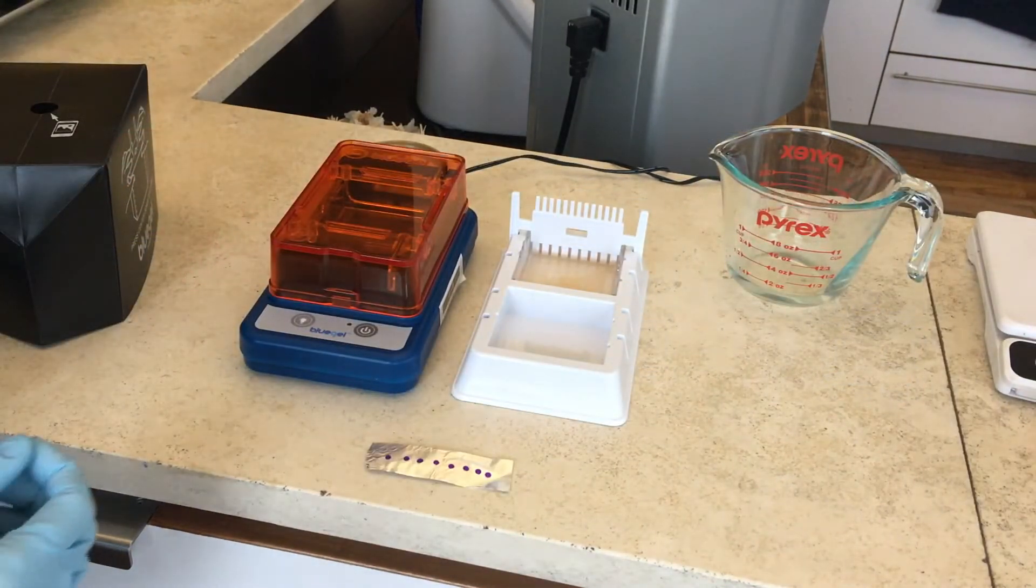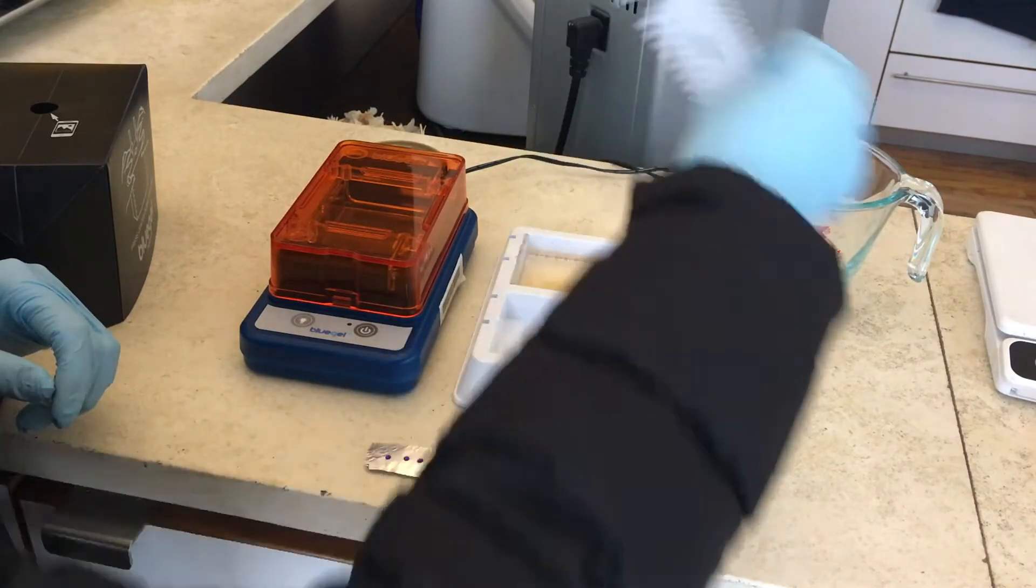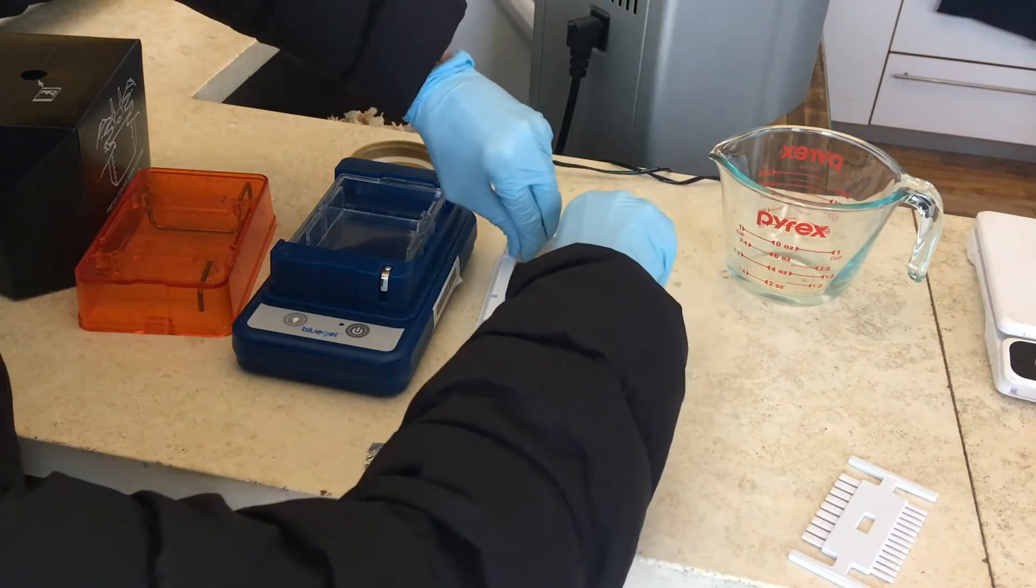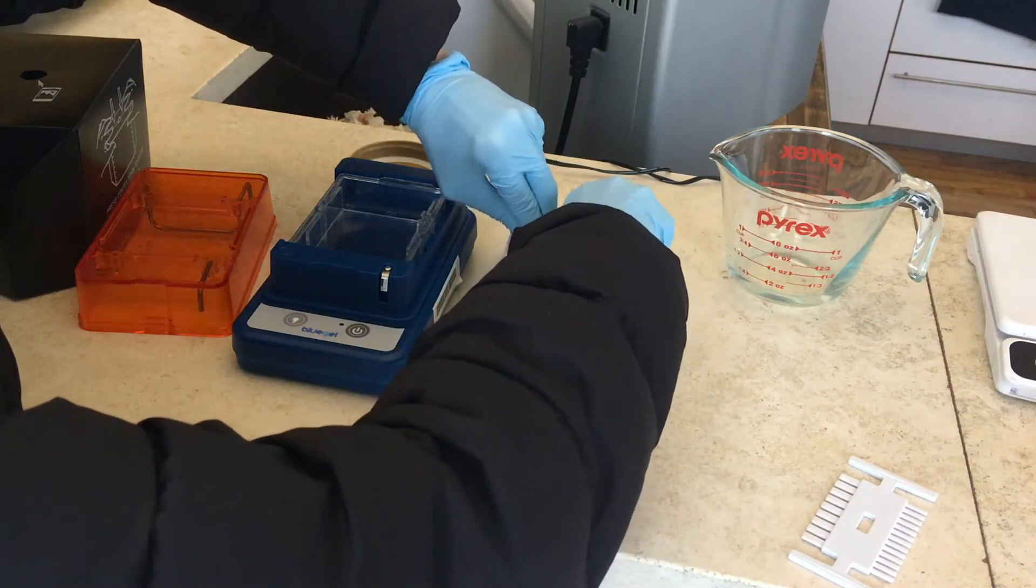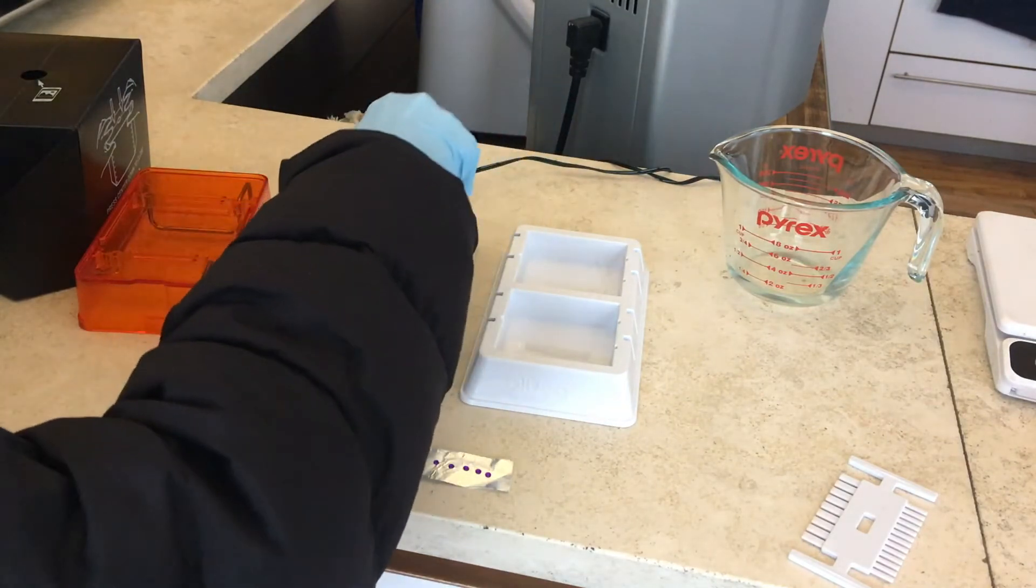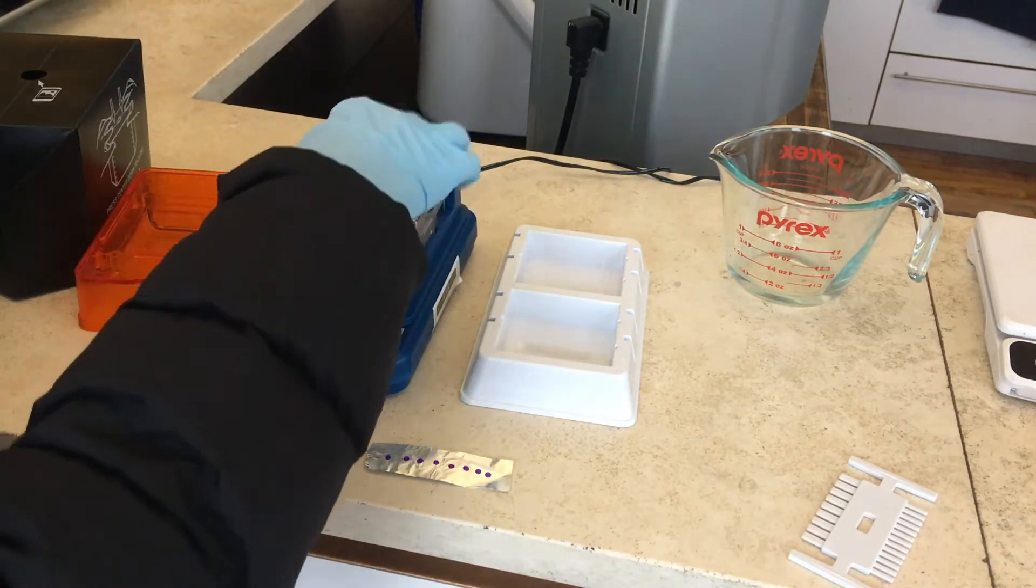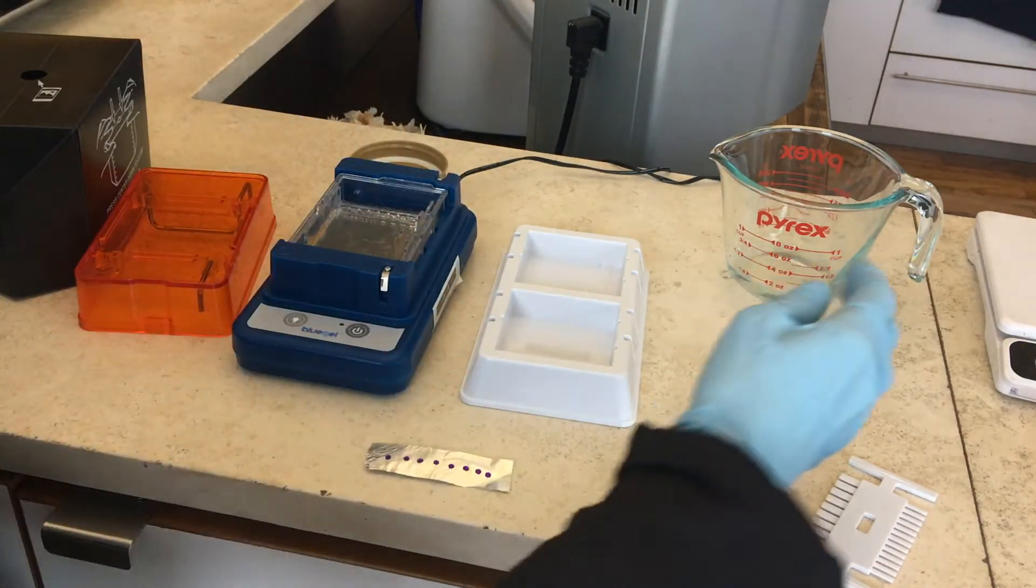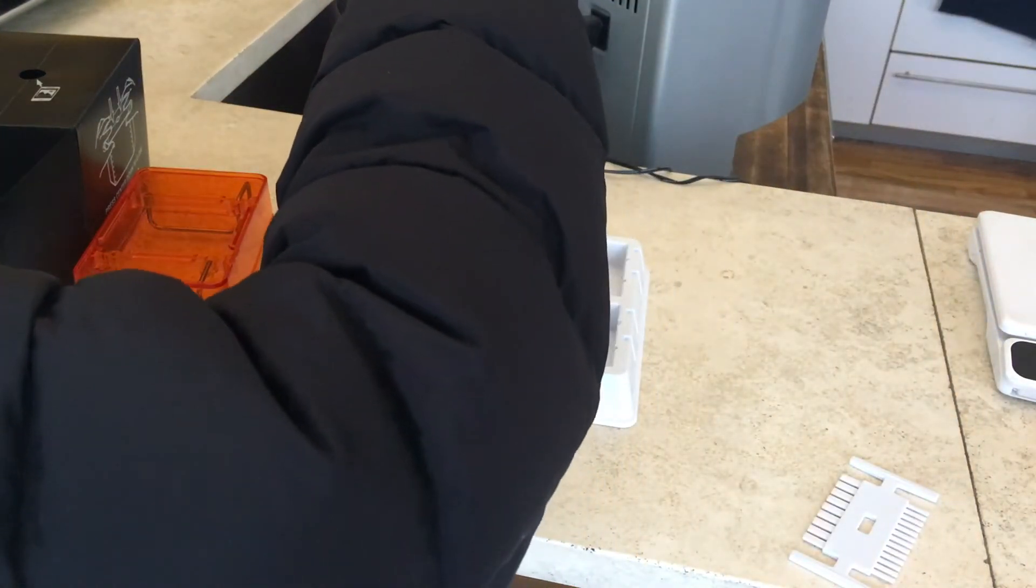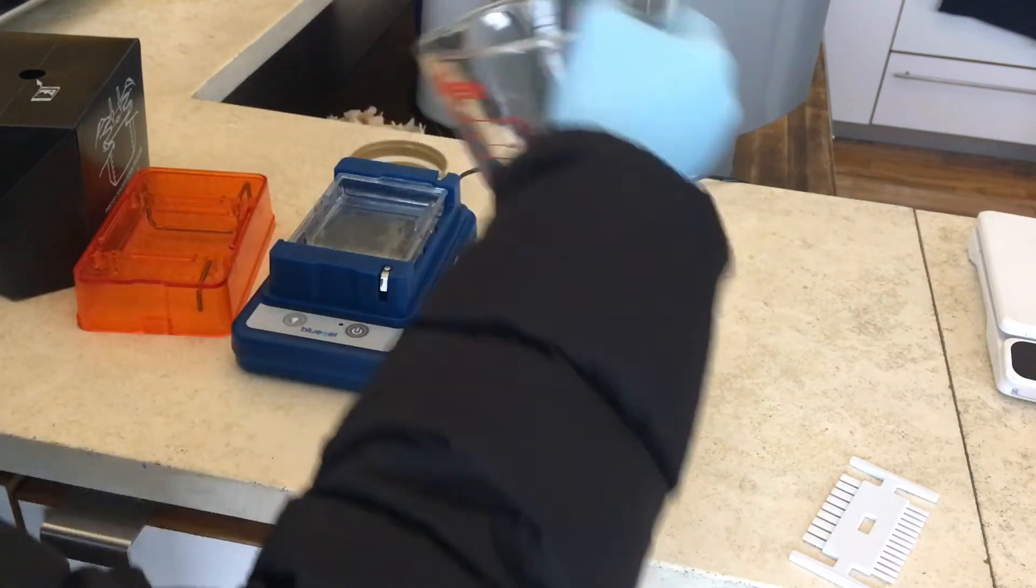Our gel should have set at this point. So what we're going to do is pull out the comb first and then we're going to lift this tray out and we're going to put it in here. There's this plastic piece that kind of slots in here and you're going to put the agar gel in there. And the next thing we're going to do is pour over some of the TBE buffer to just cover it. 30 milliliters should just cover it.